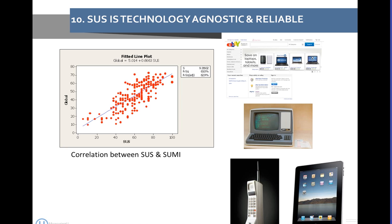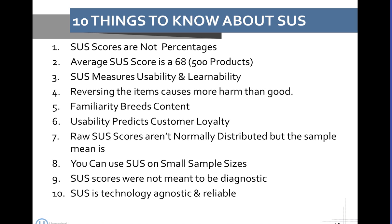SUS is technology agnostic. It is also reliable — even though John Brooke built it as quick and dirty, you could characterize it as quick and clean. Reliability is measured in a number of ways. The internal reliability measured by Cronbach's Alpha is pretty high — as high as other commercially available questionnaires like SUMI and QUIS. There's a very high correlation between SUS and SUMI, showing convergent validity with another instrument. So there's evidence that it's quick, reliable, and a valid instrument.